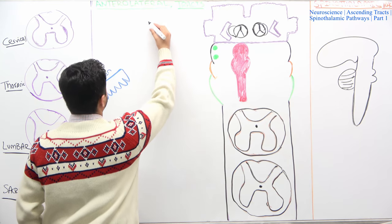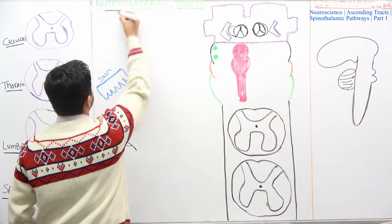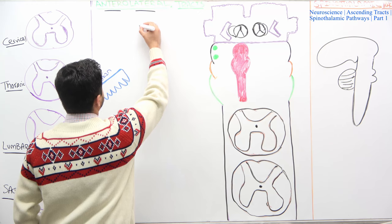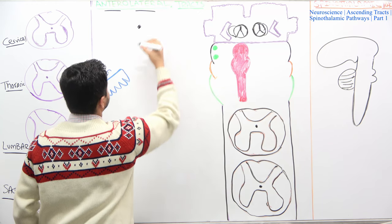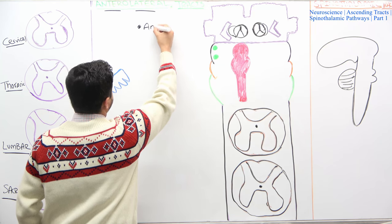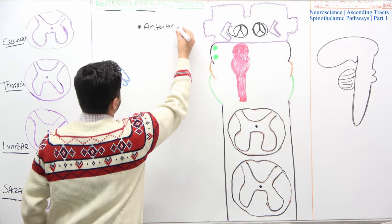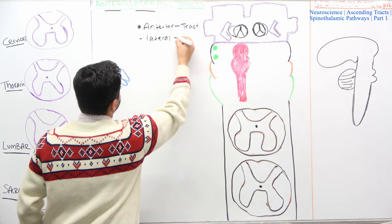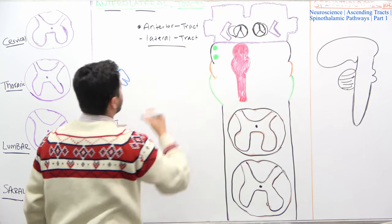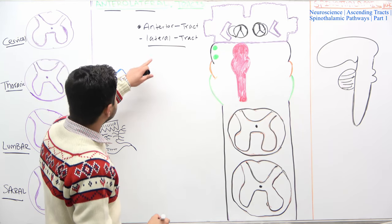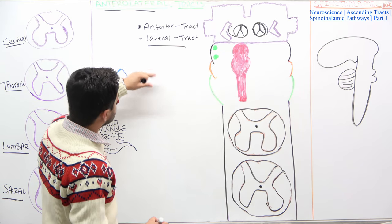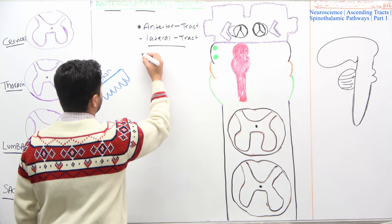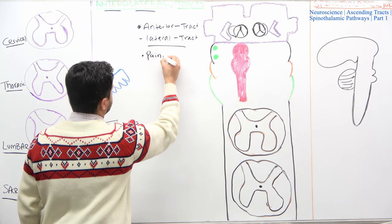The anterolateral tract has an anterior component and a lateral component. We'll talk about how those names came about. These tracts are bringing sensory information — specifically, very important sensations: pain, temperature,